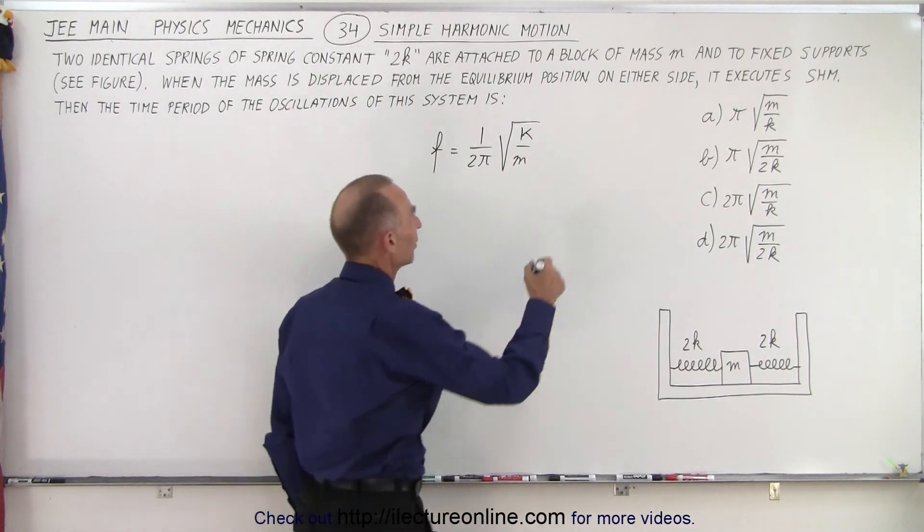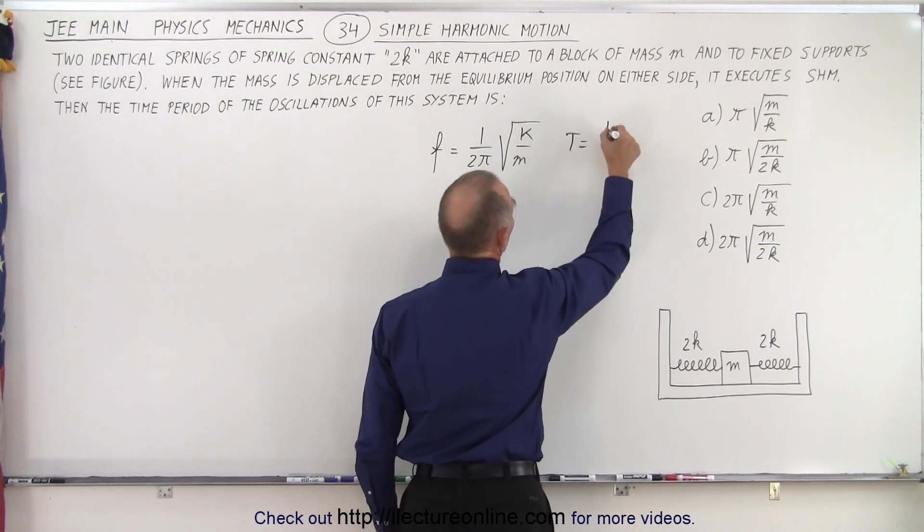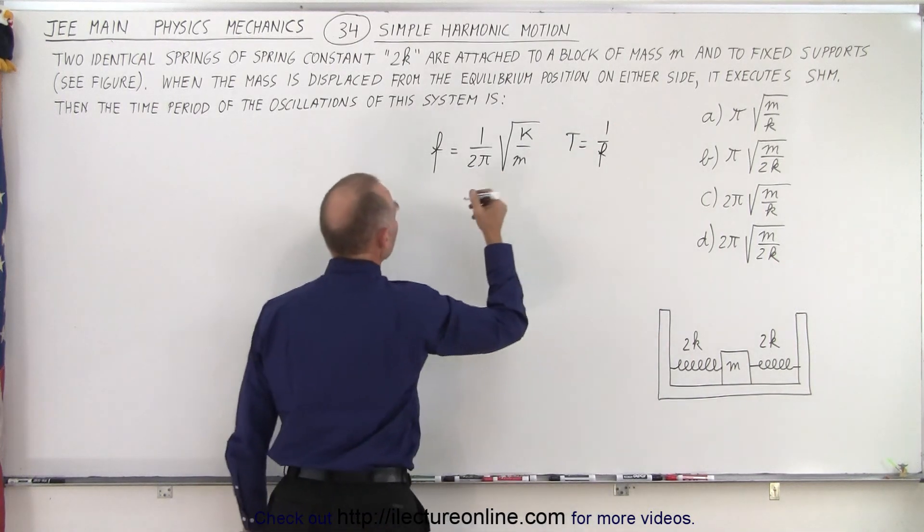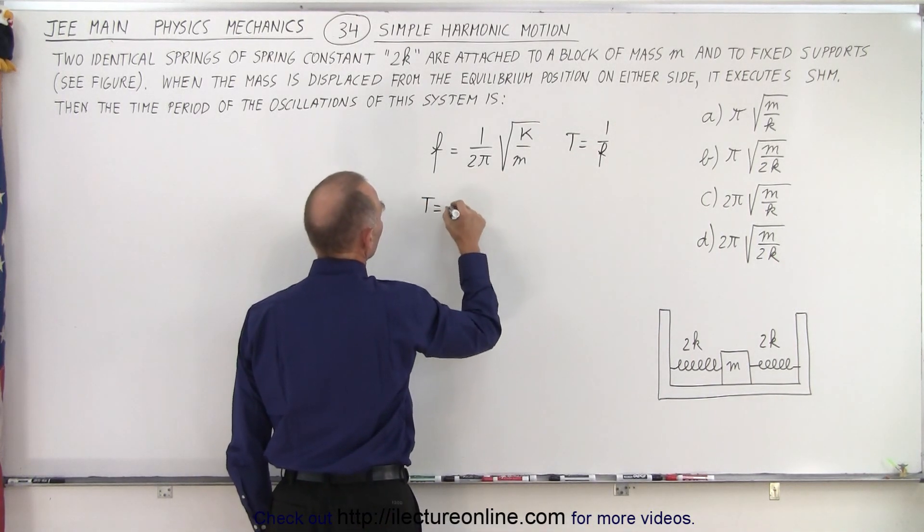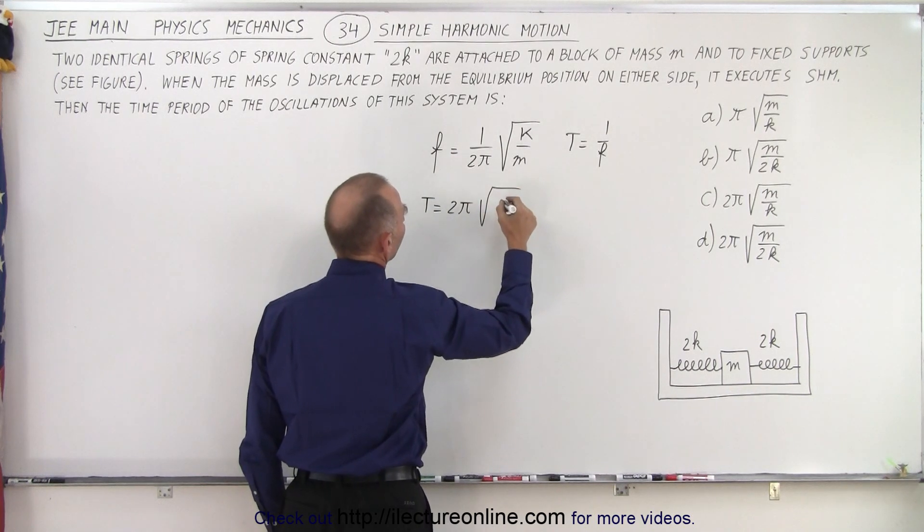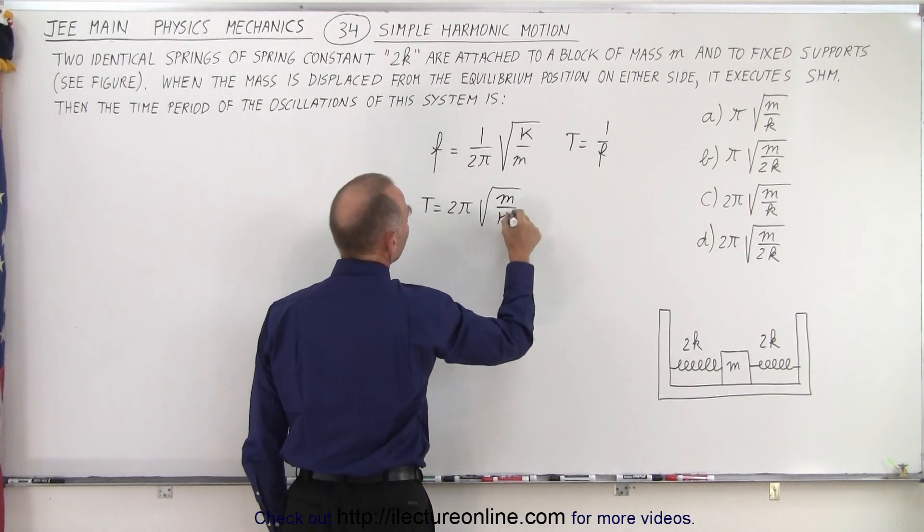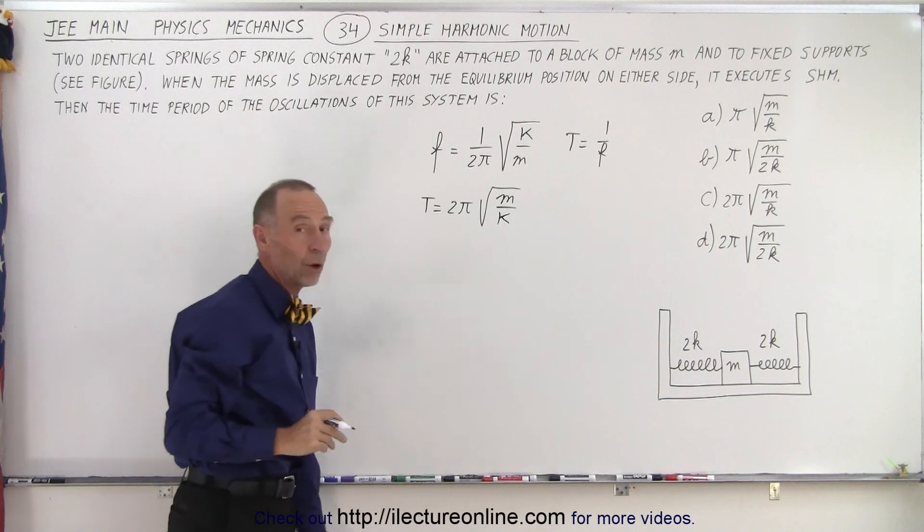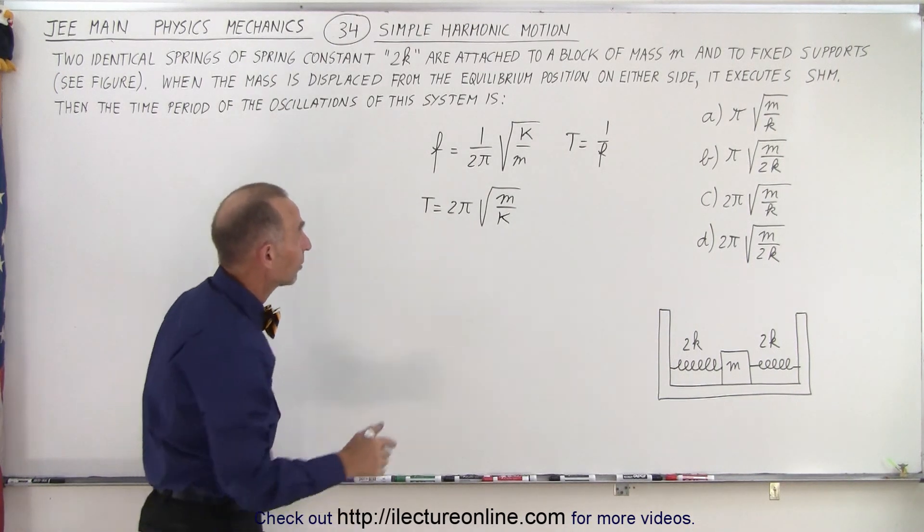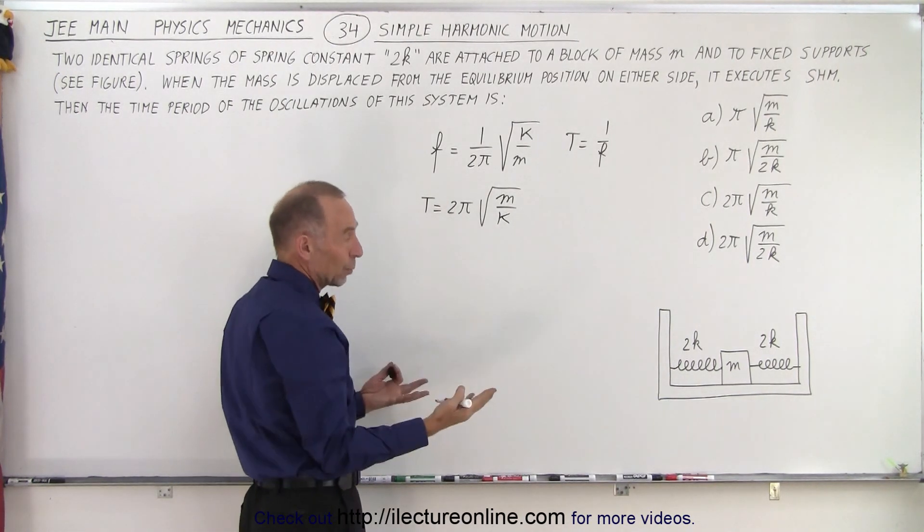And we realize that the period is equal to 1 over the frequency, so we simply take the inverse, and so the period is equal to 2π times the square root of m over k. So now all we have to do is replace the k here with what the k really is.